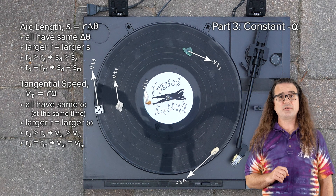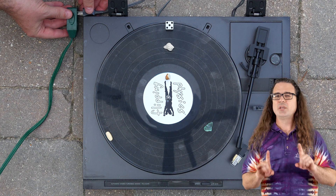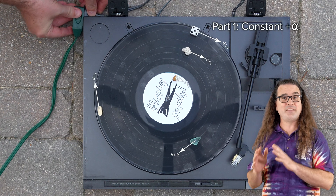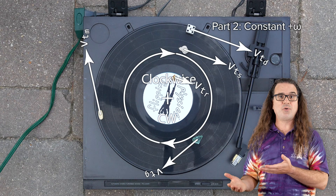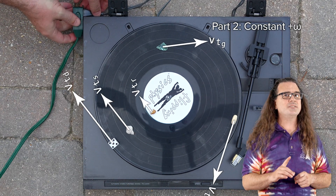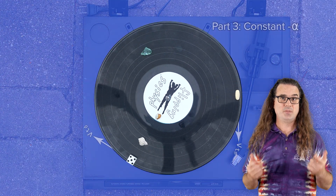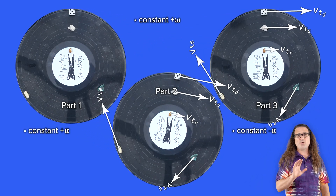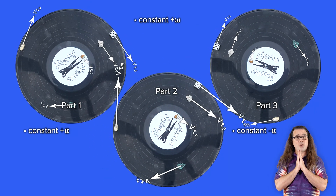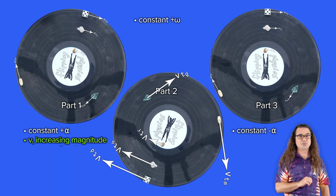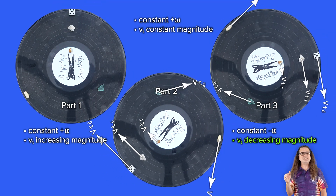Let's also look at tangential acceleration. Let's start by looking at the tangential velocities of each of these objects for the whole event. Part one is constant positive angular acceleration. Part two is constant positive angular velocity — positive because we defined clockwise as positive in this demonstration. And part three is constant negative angular acceleration. Notice that the angular velocity of the system is positive the entire time. During part one, the tangential velocities are increasing in magnitude. During part two, the tangential velocities have constant magnitudes. And during part three, the tangential velocities are decreasing in magnitude.